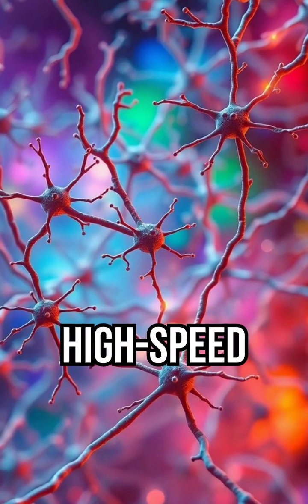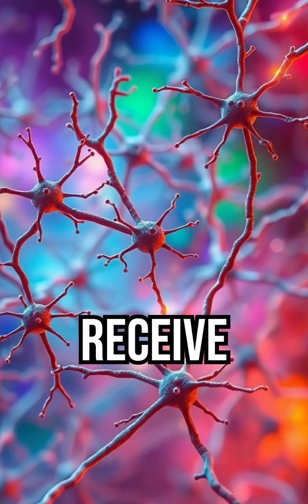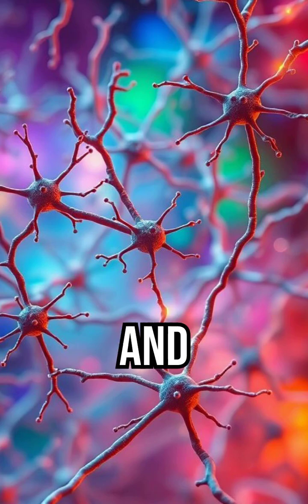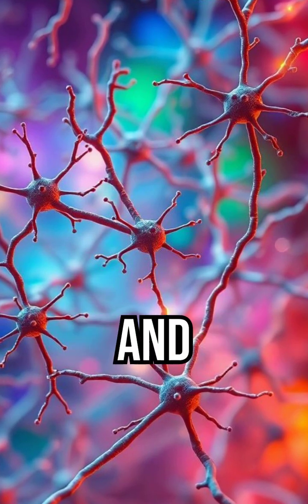Neurons act like your body's high-speed wiring system. They receive signals, process them, and send instructions to other neurons, muscles, and organs.